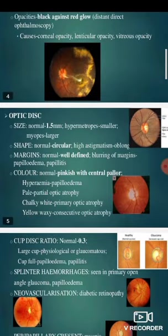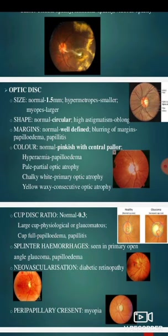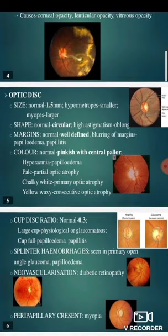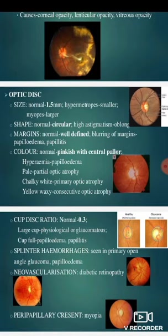Then we will discuss the optic disc. The normal size of the optic disc is 1.5 mm. In hypermetropes the optic disc is smaller, whereas in myopes it is larger. Normally the shape is circular, but in high astigmatism the shape becomes oblong. The margins of the optic disc are well defined in a normal person, whereas blurring of the margins occurs in papilledema and papillitis.